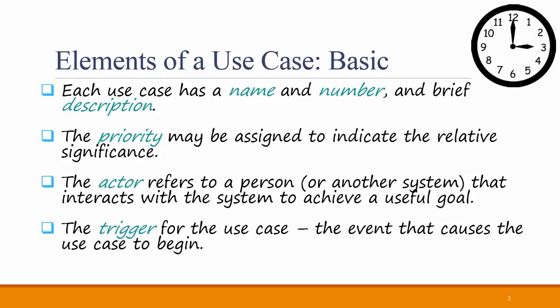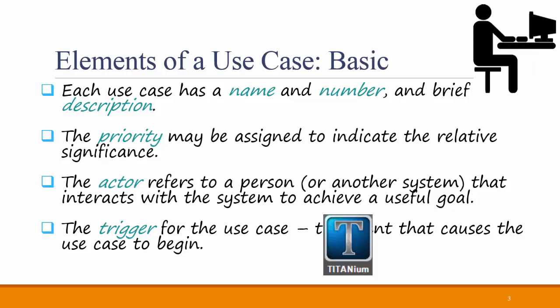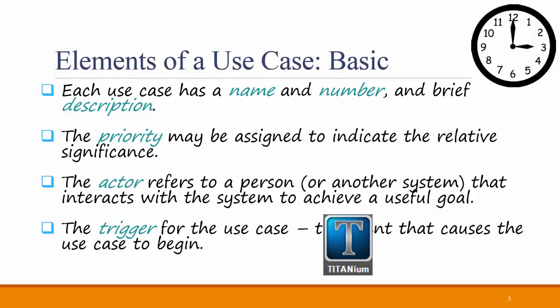Using the same Titanium example, an external trigger could be the user clicking a button to add a new student. A temporal trigger might be that on the first day of class all the students who are enrolled in the course are automatically added to Titanium. It could also be that after a certain amount of time after a student has been added to Titan Online, they are then added to the Titanium course.